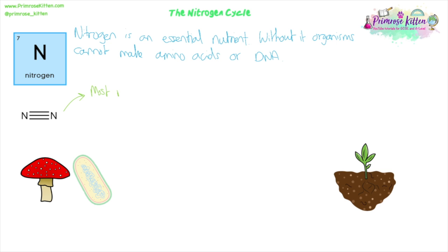Most nitrogen present on the planet is actually found as nitrogen gas in the atmosphere — the air around us, which is about 70% nitrogen. There's a lot of it, but it's very unreactive, so it's not easy to just absorb that nitrogen gas from the air. Plants have to get it into their systems in a different way in order to start using it to make protein.